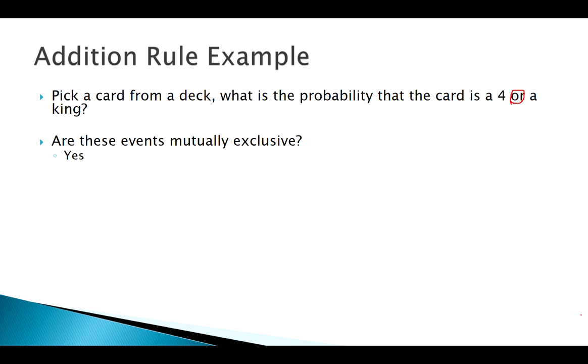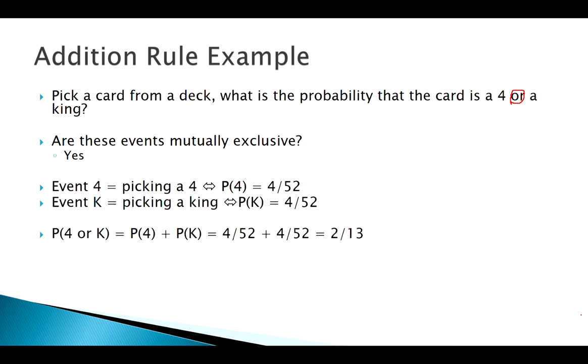Yes, these are mutually exclusive. You can't draw a card that's both a four and a king. There are four fours in the deck out of 52, and also four kings. Simply add those together. I don't need to worry about subtracting an intersection. I get 2 out of 13. It's pretty easy if they're mutually exclusive.